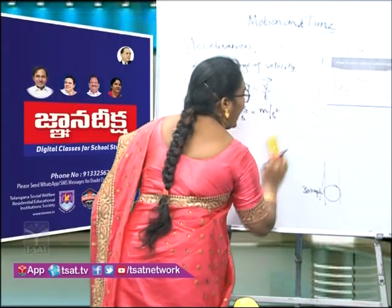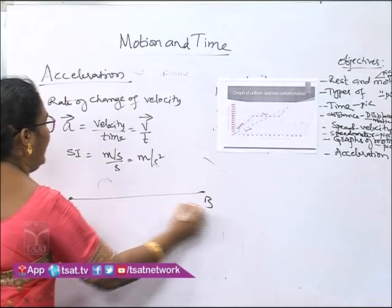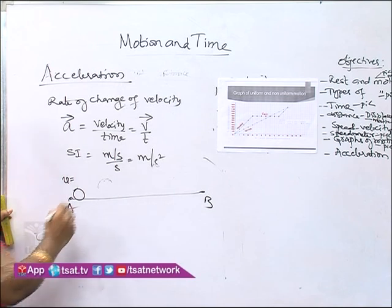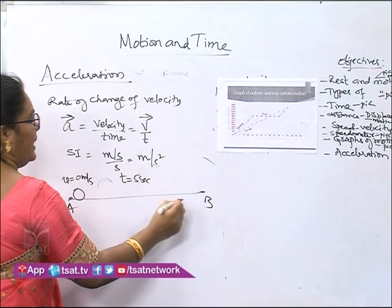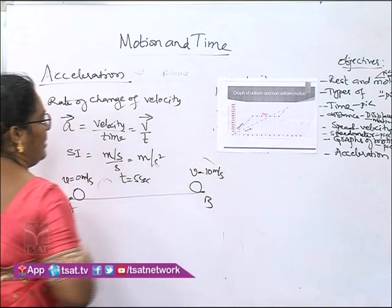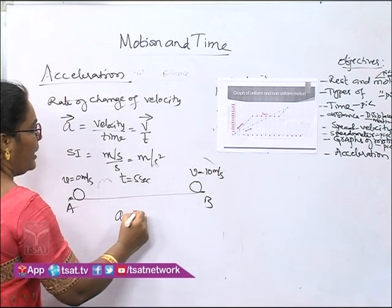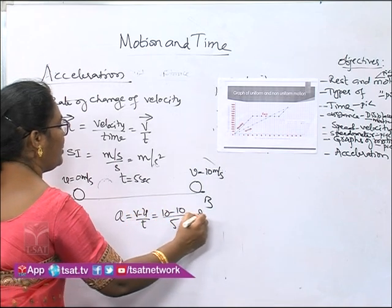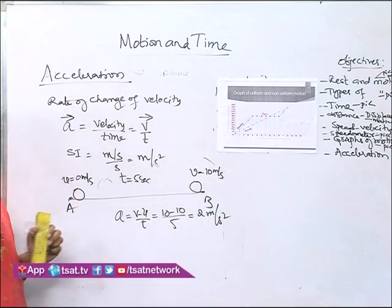How do you find the acceleration? Suppose at point A a body has initial velocity U equals 0 m/s, and after time t equals 5 seconds it reaches point B with final velocity V equals 10 m/s. Acceleration A equals (V − U) / T, which is (10 − 0) / 5, equals 2 meter per second squared.